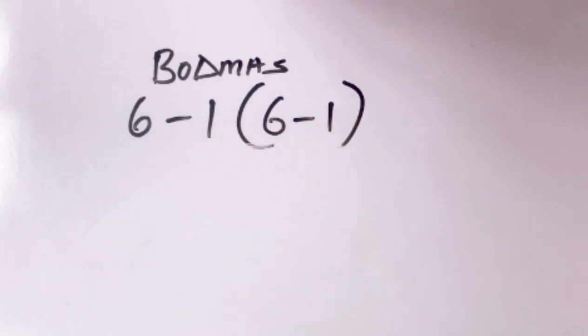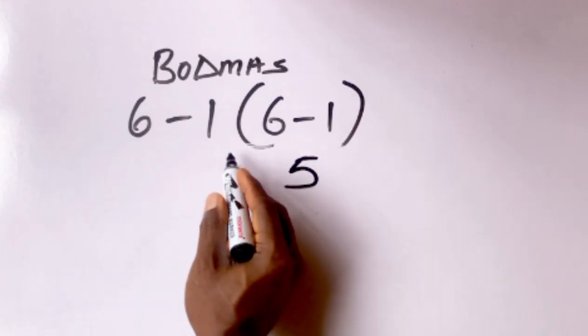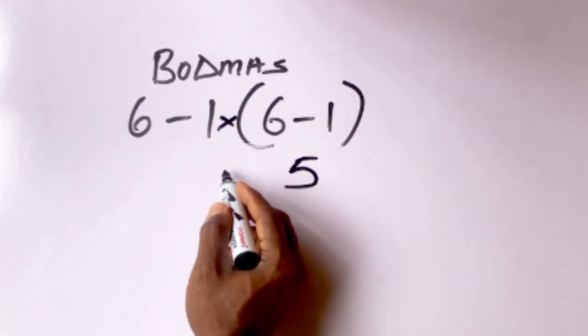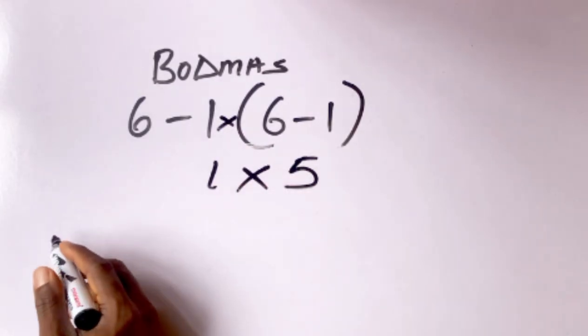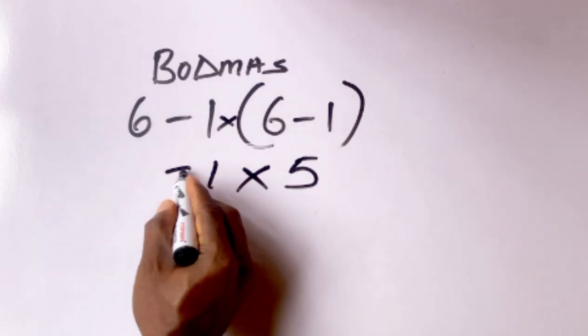So let's solve it. 6 minus 1 is what? 5. Remember there is times here. Multiplied by what? 6 minus 1.